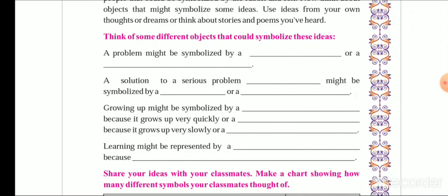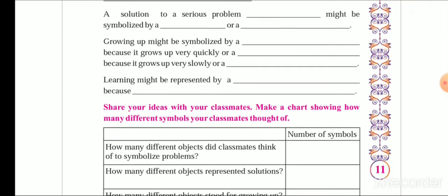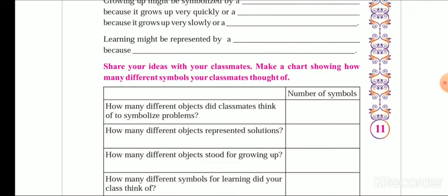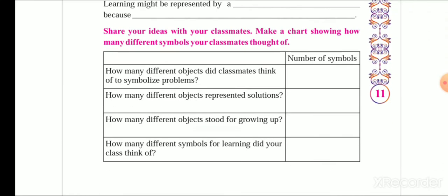Growing up might be symbolized by something — kya jaldi grow ho jaata hai ya kya dhire se grow hota hai? Learning might be represented by a blank — learning ko kis cheez se represent karoge aur kyun? Share your ideas with your classmates and make a chart showing how many different symbols your classmates thought of. This activity we will do when school opens. With this we conclude our first chapter, and we will move on to the next chapter in the next session. Thank you.